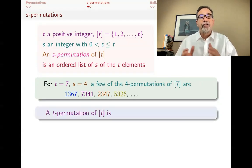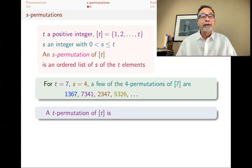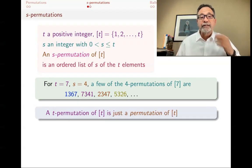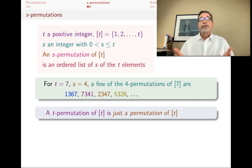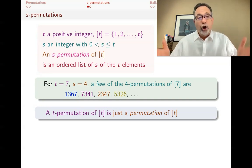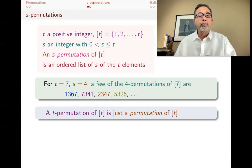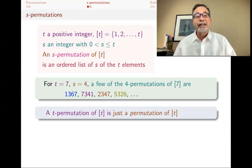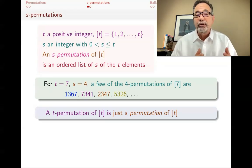A T-permutation of bracket T would mean you are picking T elements — but that's all the elements — so you're taking all the elements and finding their permutations. That's what in previous slides we just called the permutation. When you say a permutation of a set, you mean take all of its elements and write them in some order. But if you want just some of the elements, not all of them, you call that an S-permutation.